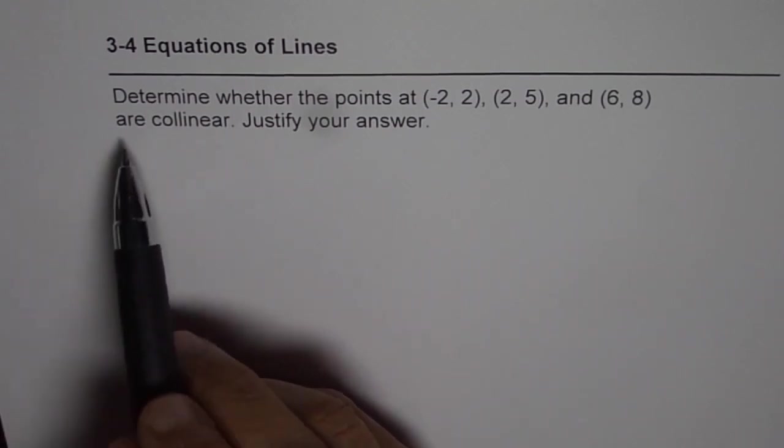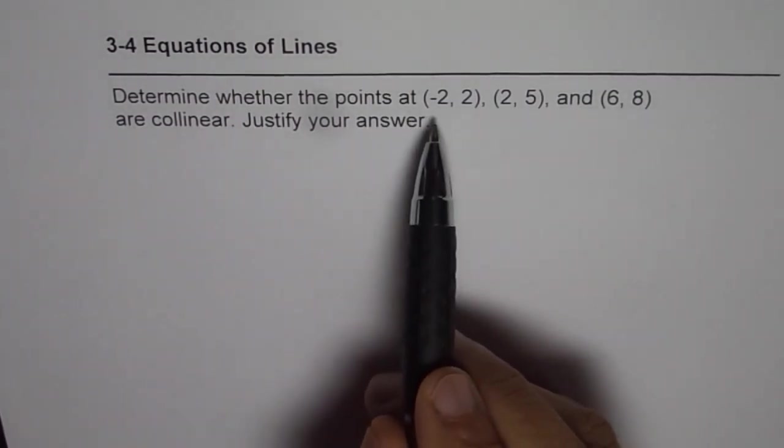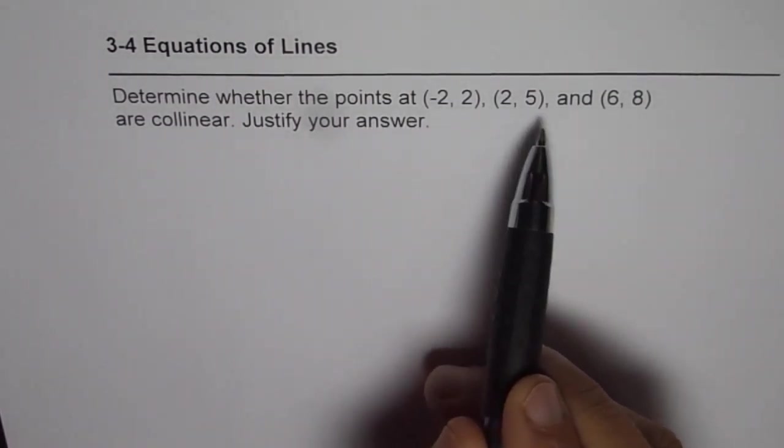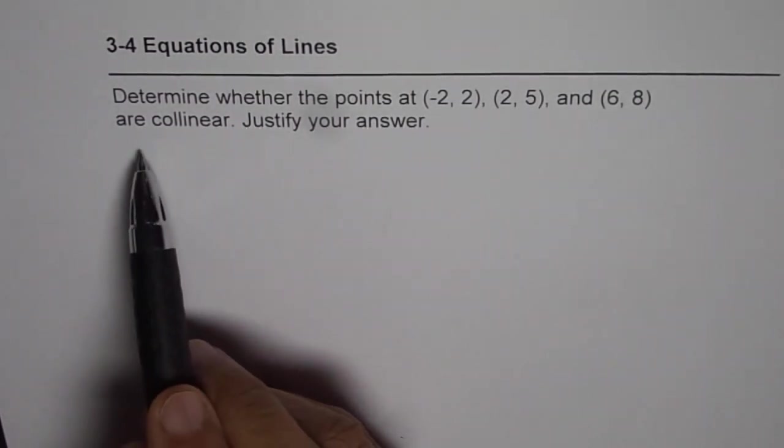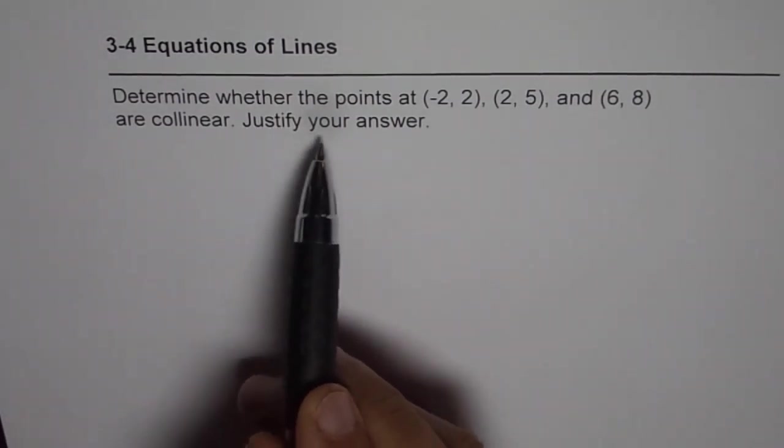The question is: determine whether the points at (-2, 2), (2, 5), and (6, 8) are collinear. Justify your answer.